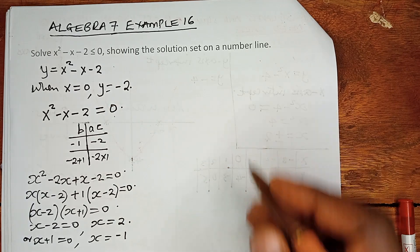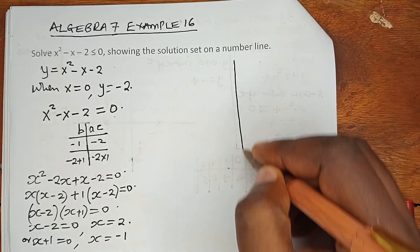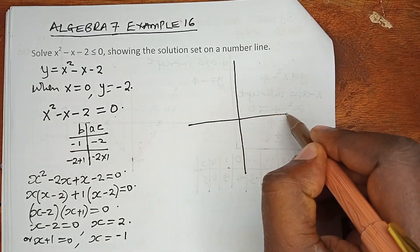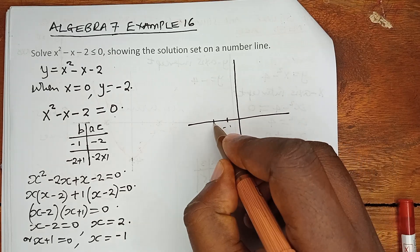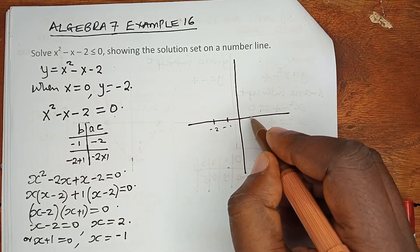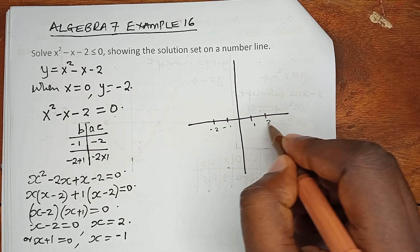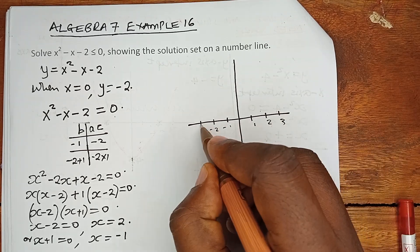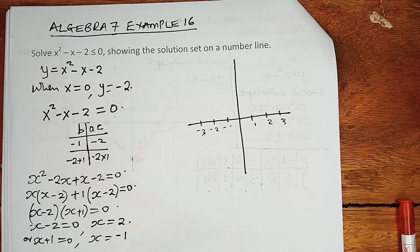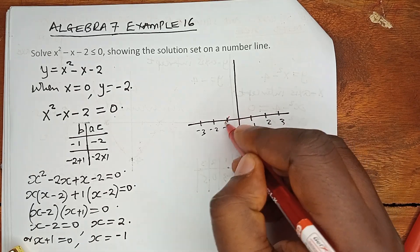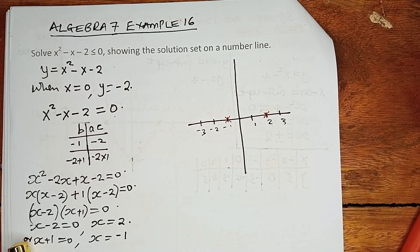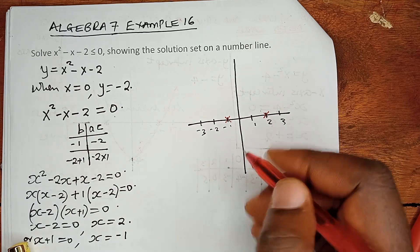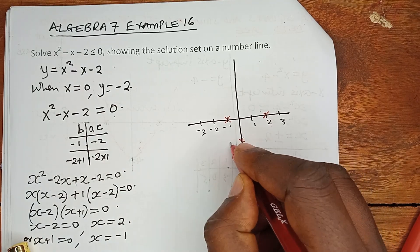So in an attempt now to plot the graph, we can have minus 1, minus 2, and we can have 1, 2, 3, minus 3. The critical values are x equals negative 1 and 2. But the y-axis intercept is when y equals negative 2.